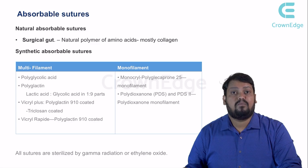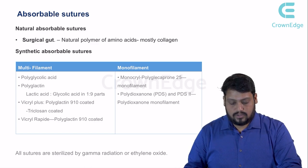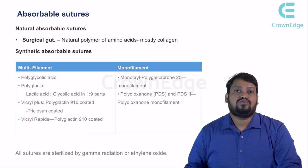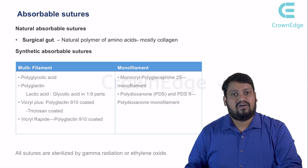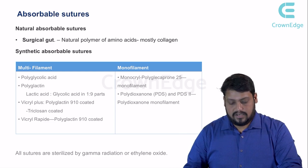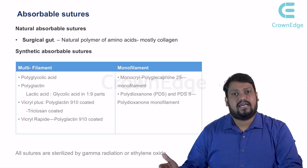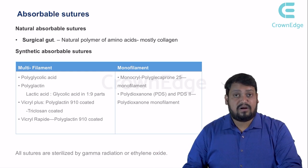In monofilament synthetic absorbables, we have monocryl and polydioxanone. Monocryl is polyglycaprone 25, a monofilament generally used where multifilament is disadvantageous — as multifilament can absorb fluids in the cavity, harboring infection. Next is polydioxanone, also known as PDS, available in varieties 1 and 2, representing further advancements in monofilament technology.